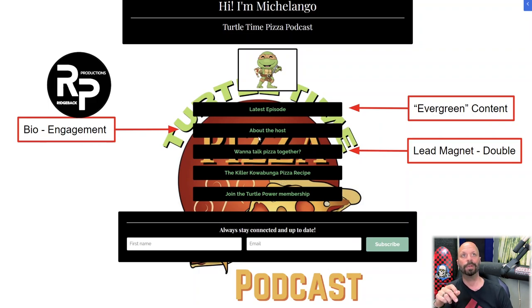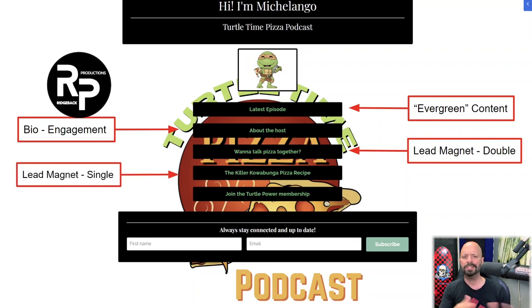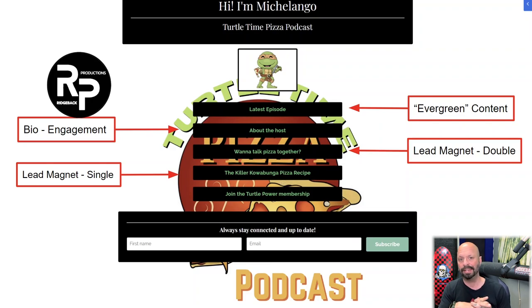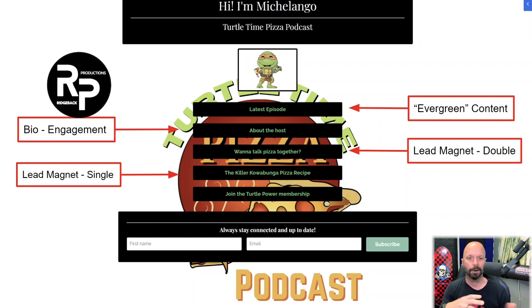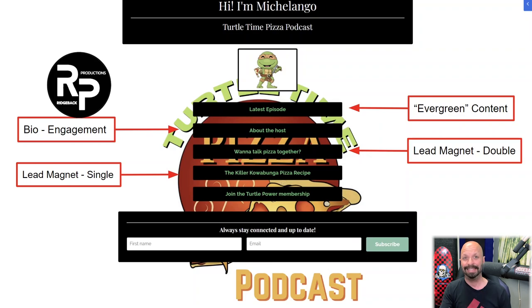The third link is the Killer Cowabunga Pizza Recipe — a clever title for our fictitious Turtle Time Pizza Podcast with Michelangelo, who is always talking about his famous pizza recipe. This is a lead magnet that is a single. Your show might have something you refer to all the time — the best times to flip houses, how to fill the seats in a barber shop, whatever your product is that you can give away for free. Whatever this lead magnet is going to be, you need to have it on your link in bio.